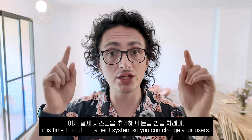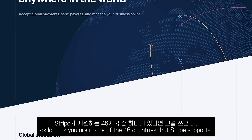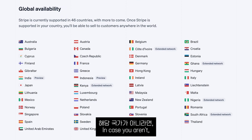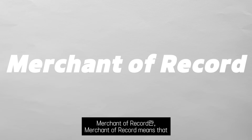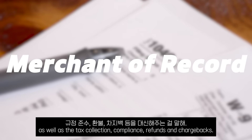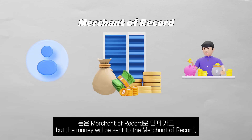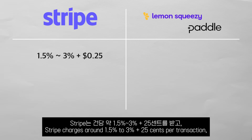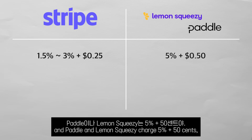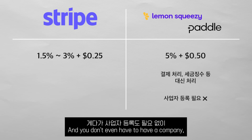Now it is time to add a payment system so that you can charge your users. For payment processing, Stripe is the industry standard as long as you are in one of the 46 countries that Stripe supports. If you aren't, you can use a Merchant of Record service like Lemon Squeezy or Polar. Merchant of Record means those companies handle the payments for you, as well as tax collection, compliance, refunds, and chargebacks. When using a Merchant of Record, your users pay through your website but the money is sent to the Merchant of Record, which then sends it to you. Stripe charges around 1.5–3% plus 25 cents per transaction, and Polar and Lemon Squeezy charge 5% plus 50 cents — a bit more expensive, but you get more things done for you, and you don't even need to have a company.